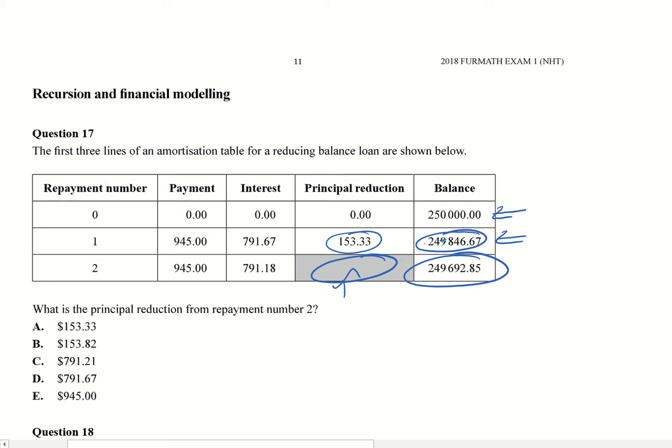An easy way if you want to think about it is you can get rid of 249 and just look at the 846.67 and subtract the 692.85 from that. Whichever way, you're going to get your answer and that is what your principal reduction is going to be for repayment number two.